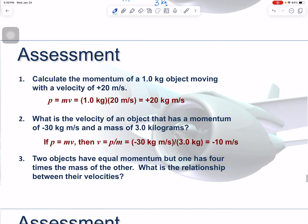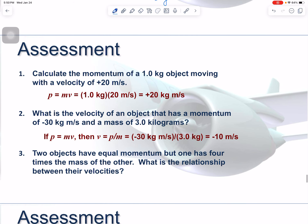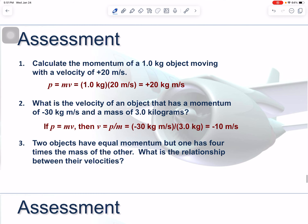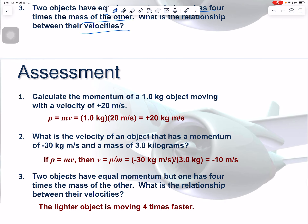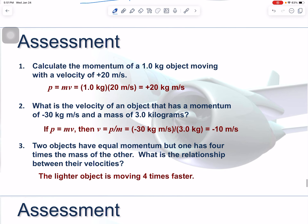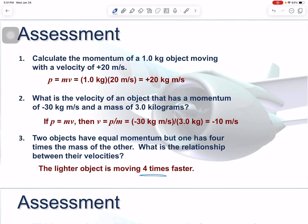Two objects have equal momentum, but one has four times the mass of the other. What is the relationship between their velocities? Since p = mv and momentum is the same for both, the lighter object must be moving four times faster than the heavier one.